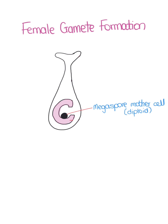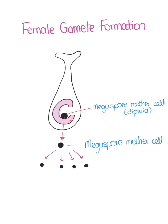Female gamete formation begins when the megaspore mother cell divides by meiosis to form four haploid cells. Three of these cells die off or degenerate, and the remaining cell is called the embryo sac.